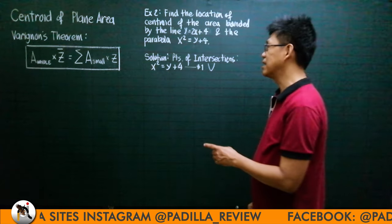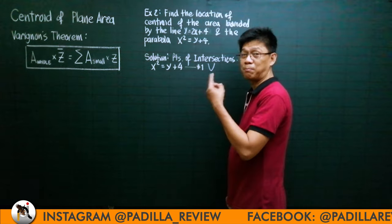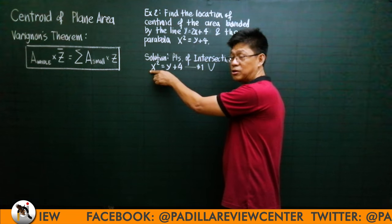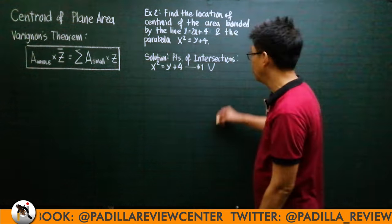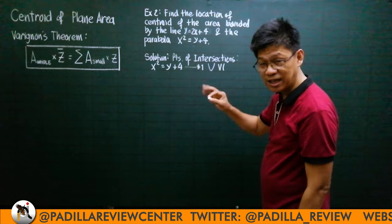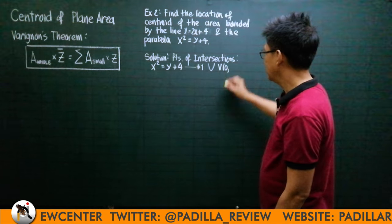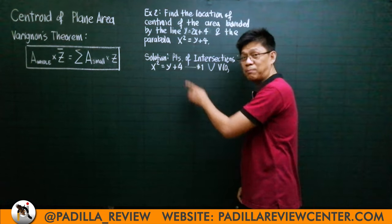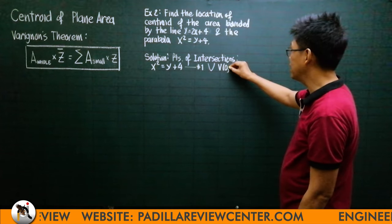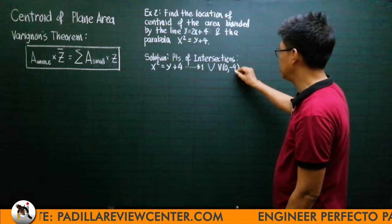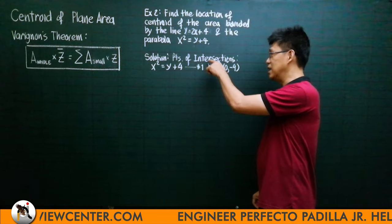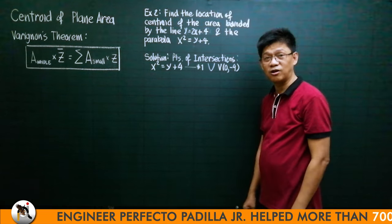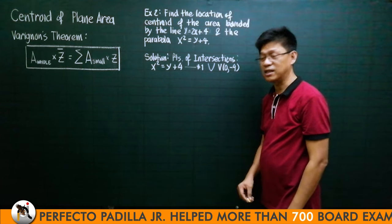Its vertex is found by setting x² = 0, giving x = 0, and then setting y + 4 = 0, giving y = −4. So the parabola opens upward with vertex at (0, −4).